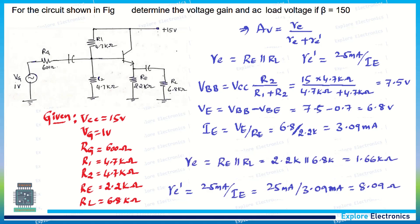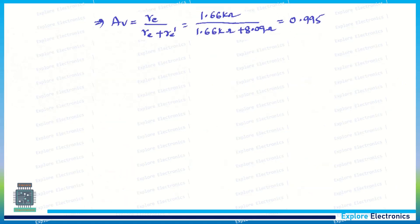RE and RL are given in the circuit itself, so we can calculate. RE and re' are calculated: RE = 1.66kΩ and re' = 8.09Ω. Now use these values and put them in Av. The gain will be 0.995, which is the gain of the amplifier.